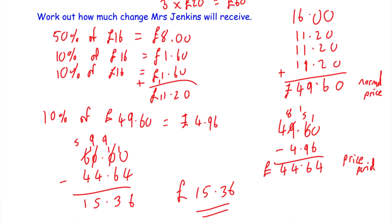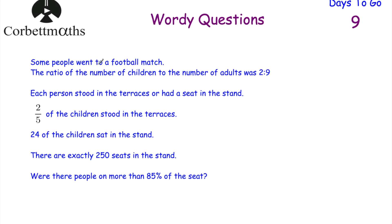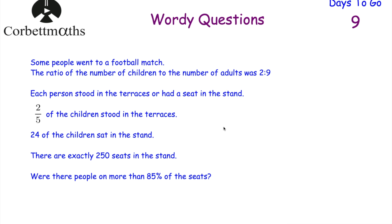Let's look at our last question. Some people went to a football match. The ratio of children to adults is 2:9 — for every 2 children there are 9 adults. Each person either stood in the terraces or had a seat in the stand. Two-fifths of the children stood in the terraces, and 24 children sat in the stand. There are exactly 250 seats in the stand. Were there people on more than 85% of the seats? It's a calculator question — read through it carefully and press pause to try it.